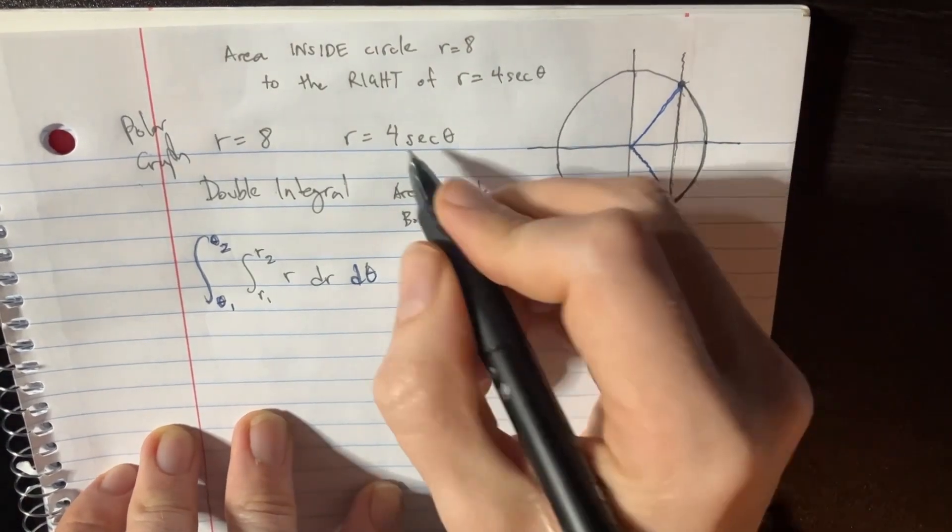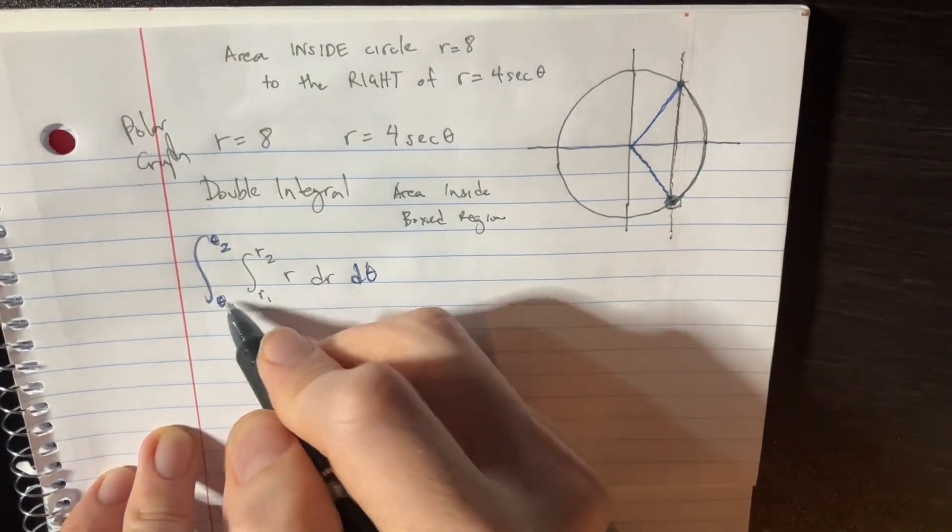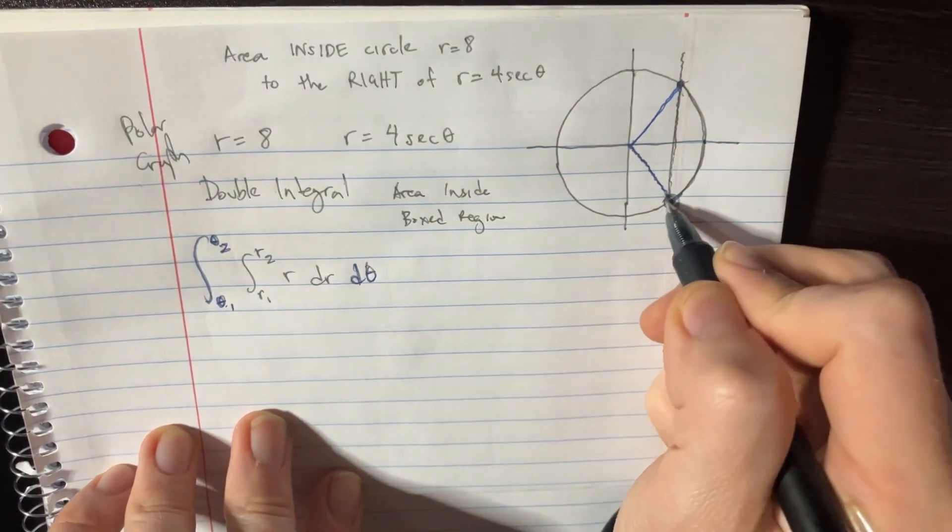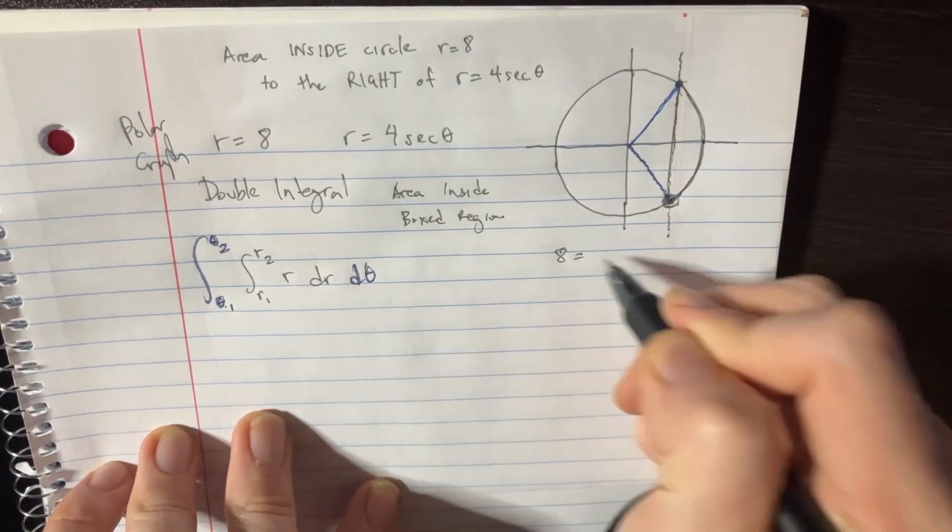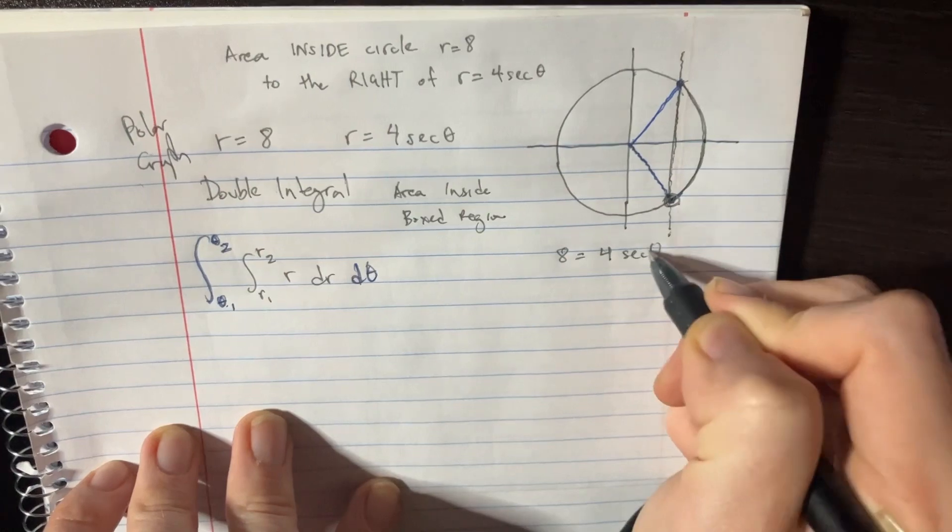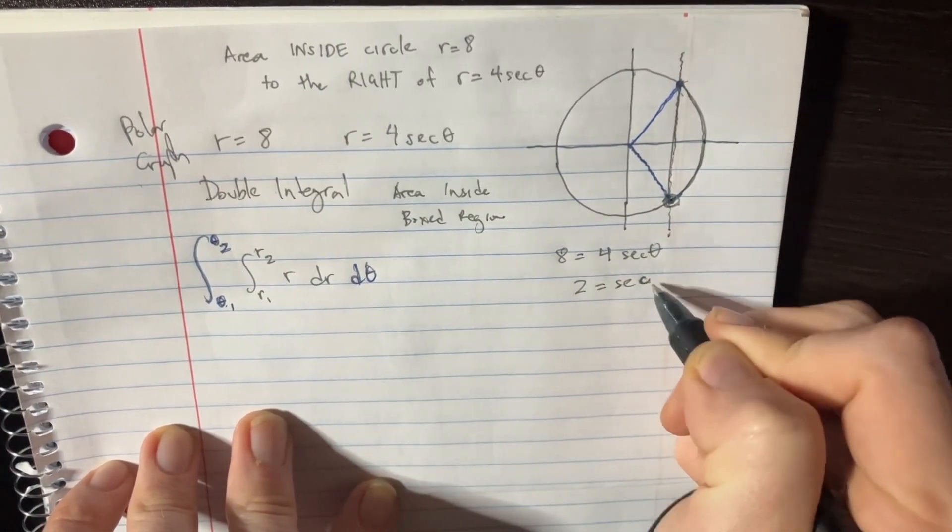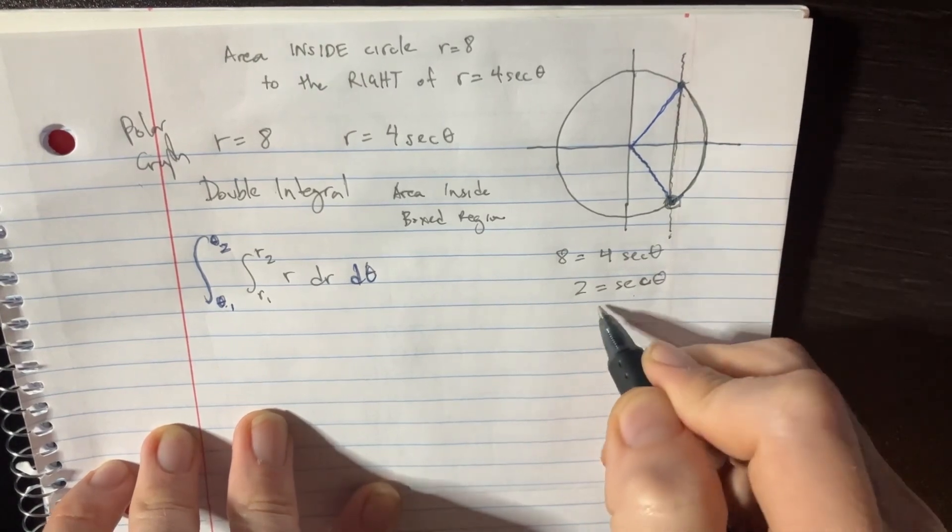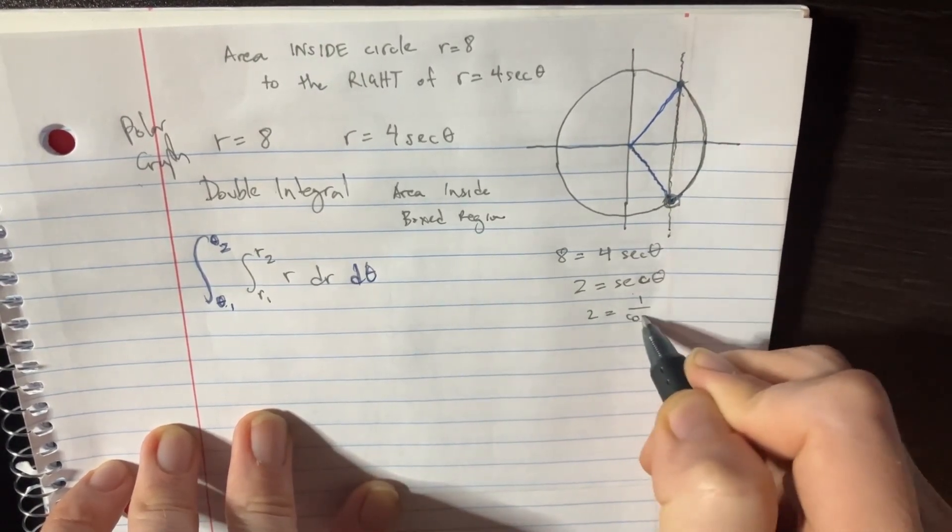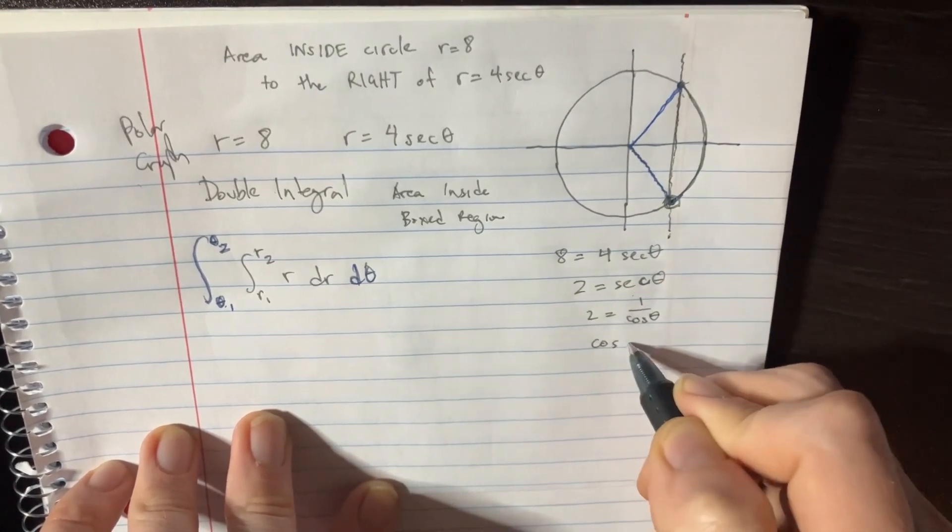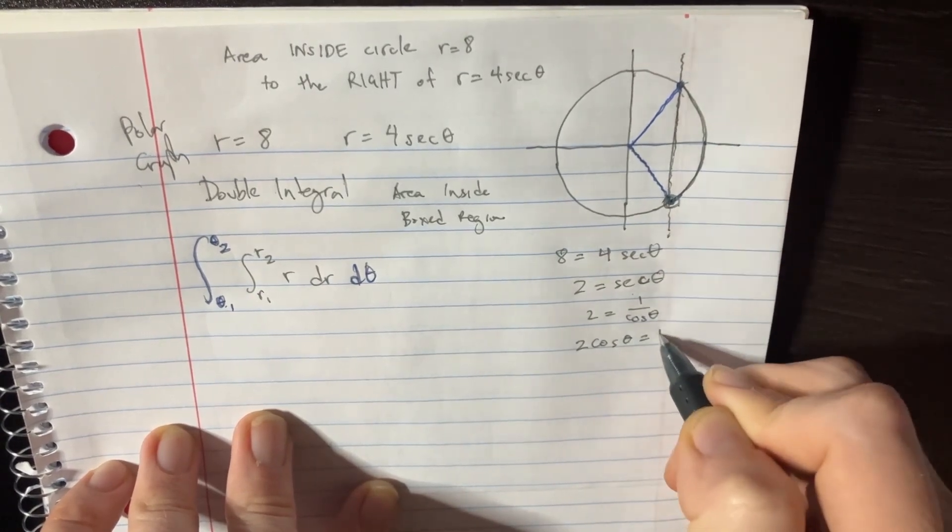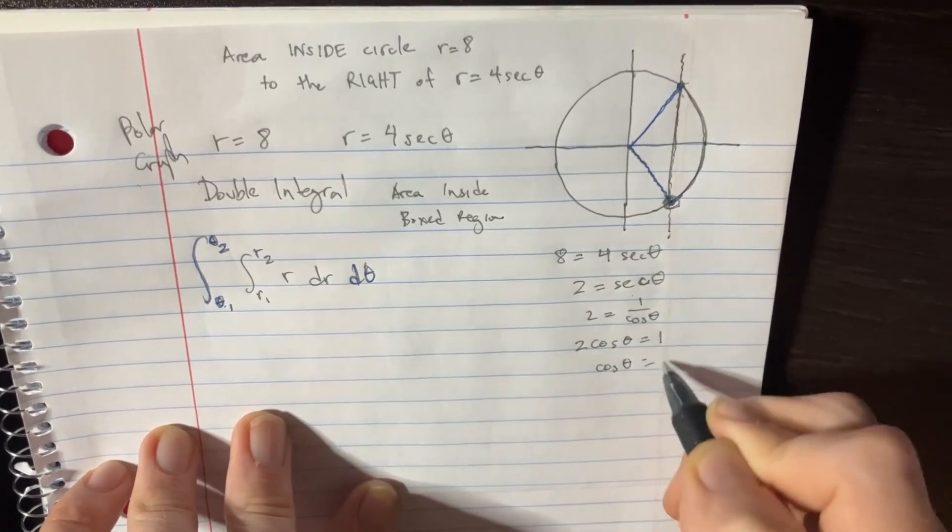So it turns out that if we start plugging this in, we got to figure out where does this intersect. Here we're going to try to figure out our limits of theta first. Where do they intersect? It's 8 equals 4 secant theta, so that's going to go into 2 equals secant theta. And then of course that's actually equal to 2 over 1 over cosine theta. Cosine of, 2 cosine theta is equal to 1.